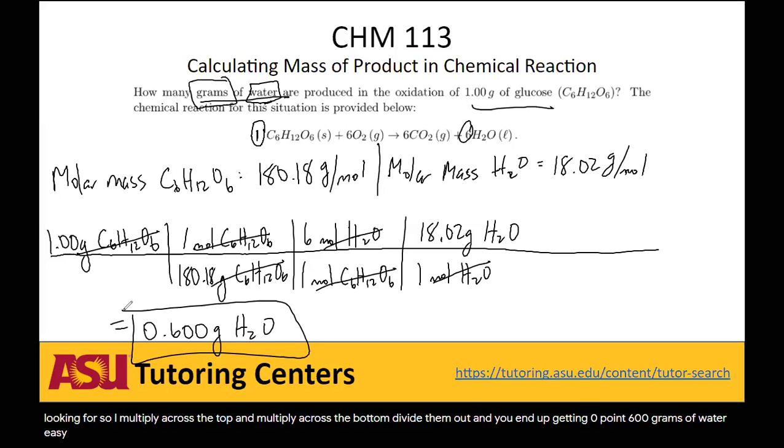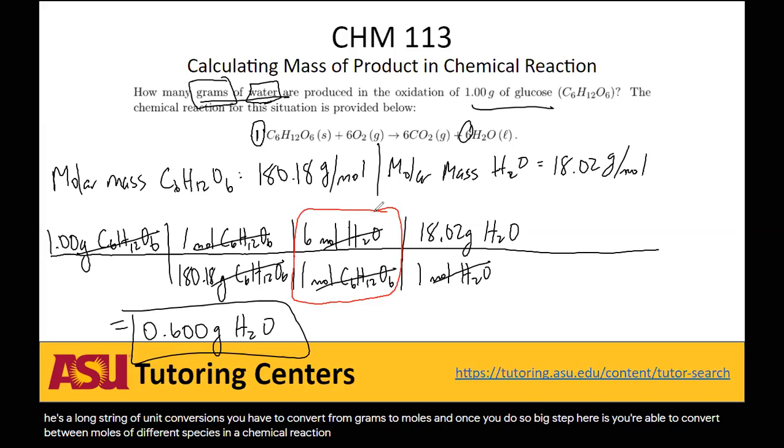So that's how you do it. It's just a long string of unit conversions. You have to convert from grams to moles. And once you do so, the big step here is you're able to convert between moles of different species in a chemical reaction. And we do that using the coefficients. This tells us the ratio between them all.